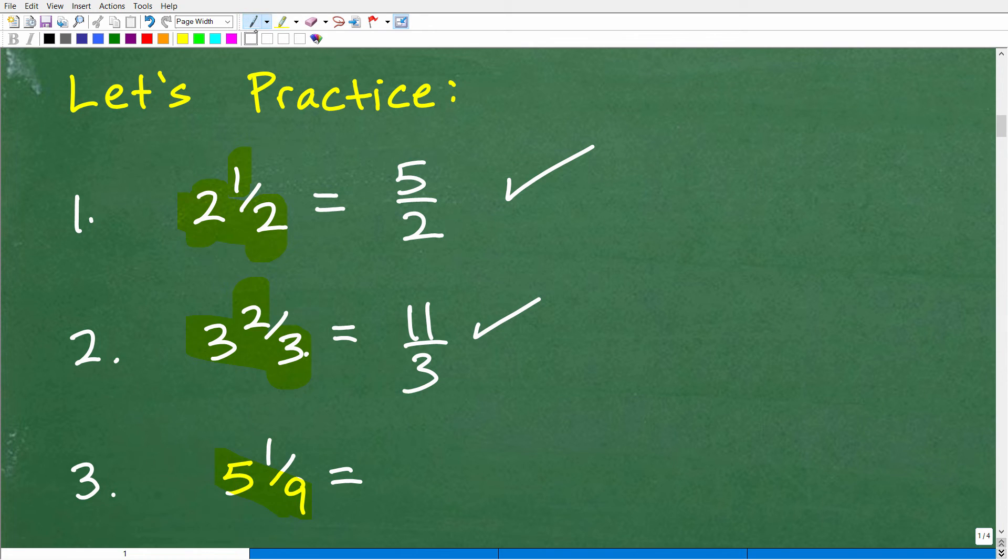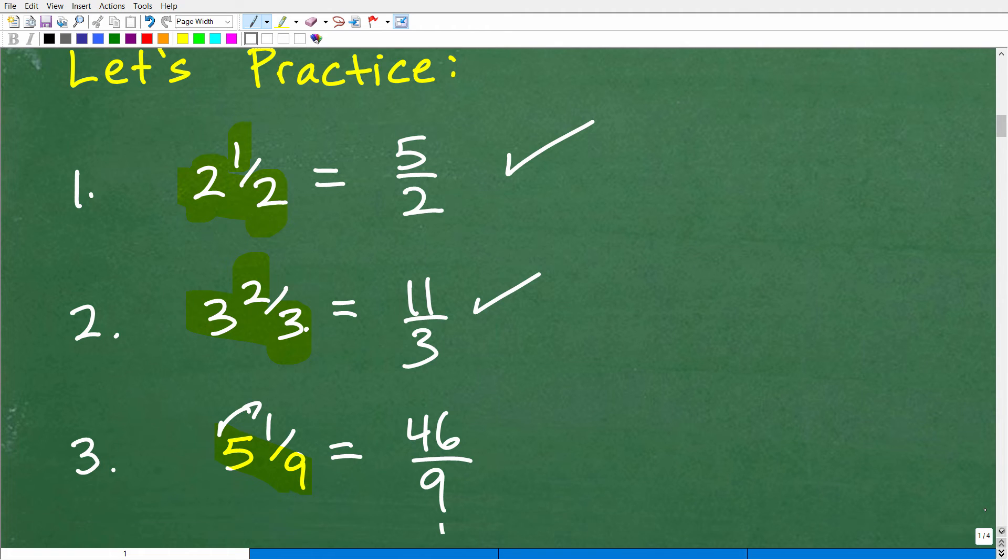All right, let's finish up with this last problem. Nine times five is what? 45, 45 plus one is 46 over nine. Now, one thing that you want to keep in mind, by the way, if you got that right, then that's excellent.